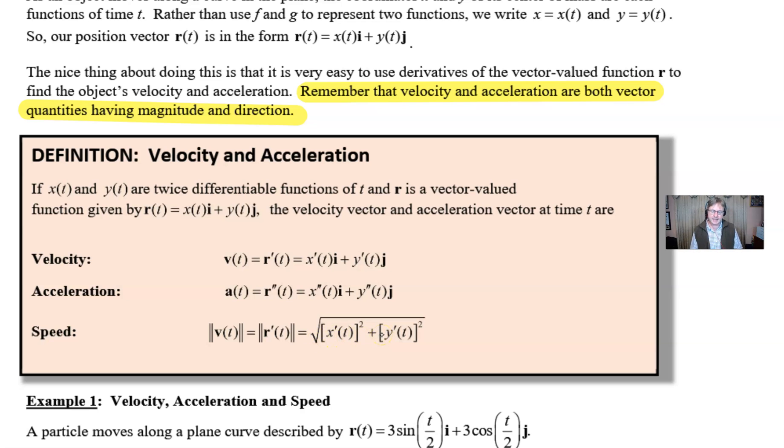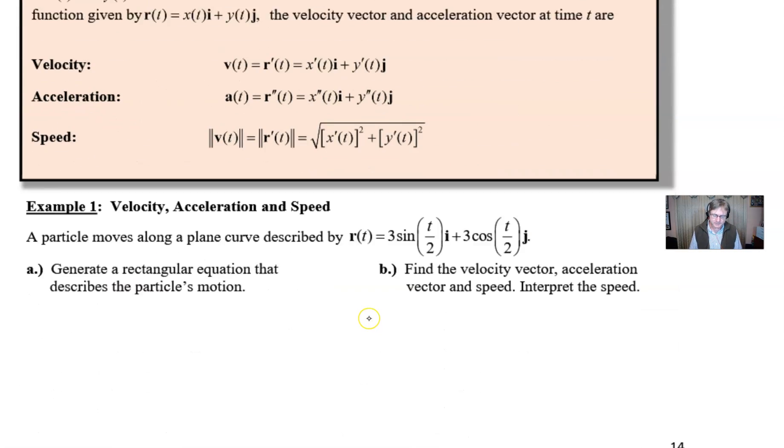You're going to be doing a lot of problems that revolve around these ideas. Each one's got a little bit of a different twist. Let's take a look at Example 1. A particle moves along a plane curve described by r(t) = 3sin(t/2)i + 3cos(t/2)j. For part a, let's generate a rectangular equation that describes the particle's motion.